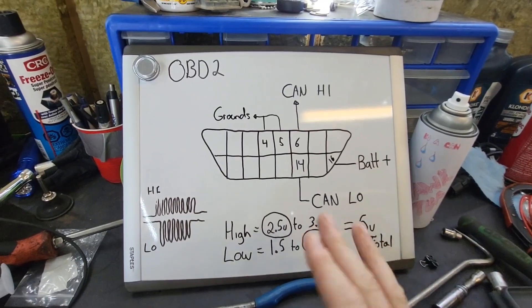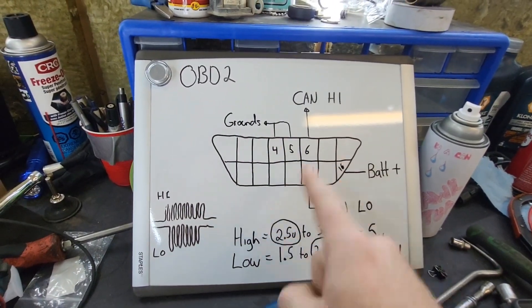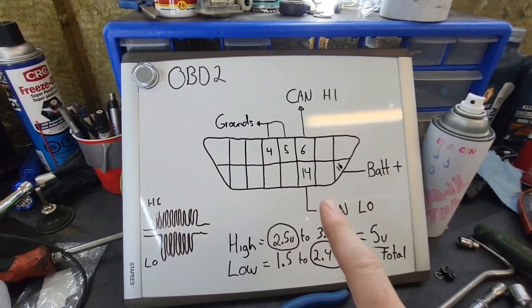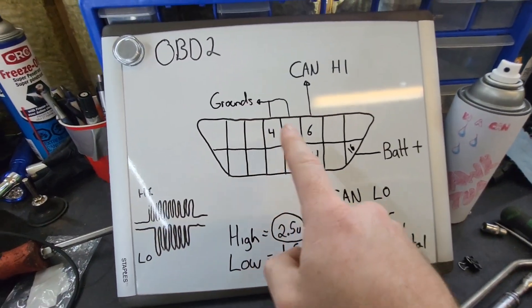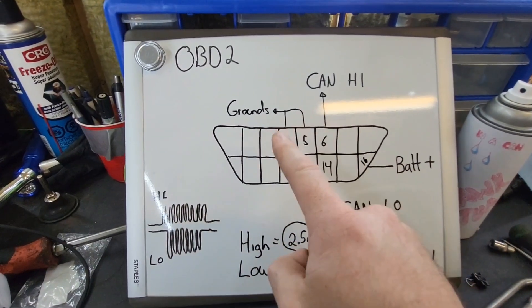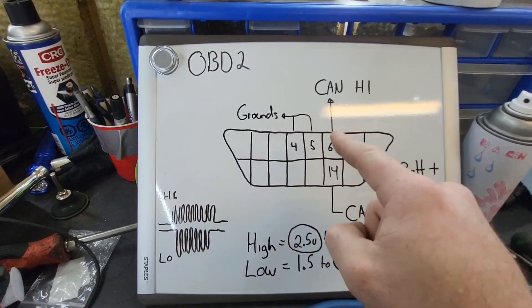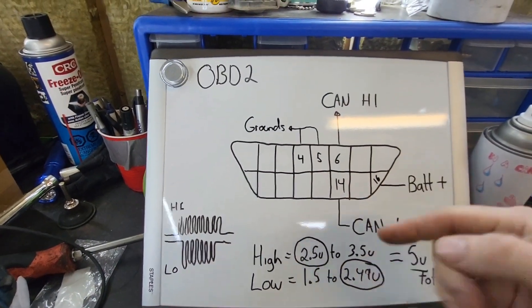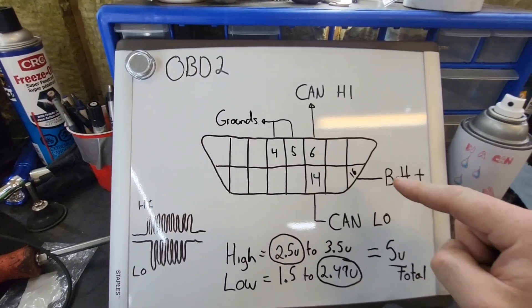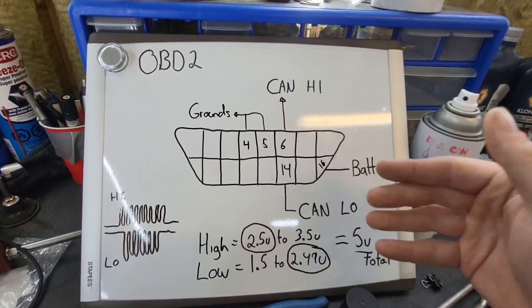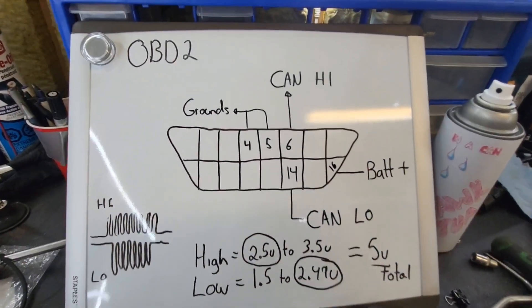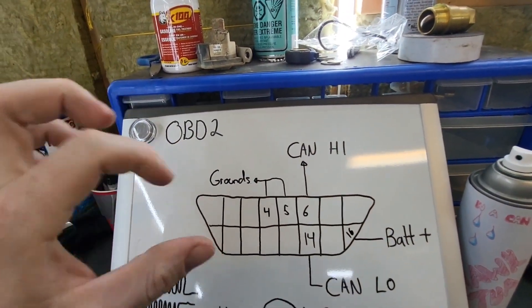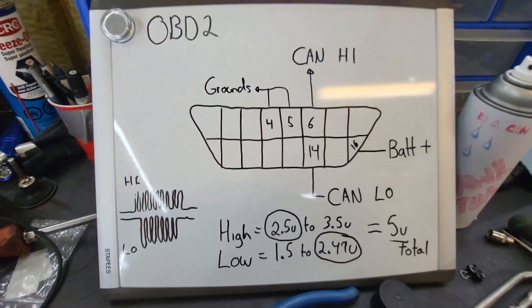First I have to explain how a CAN network works and an OBD2 connector. Every modern vehicle has an OBD2 connector. These are the only pins you really need to know: pins 4 and 5 are always grounds, pin 6 is your CAN high network, pin 14 is your CAN low network, and pin 16 is always battery voltage which is going to be 12.6 or higher depending if it's running or not. This is your common layout, what the OBD2 connector will look like. Every vehicle has one now.